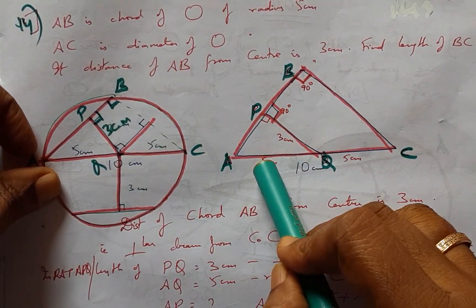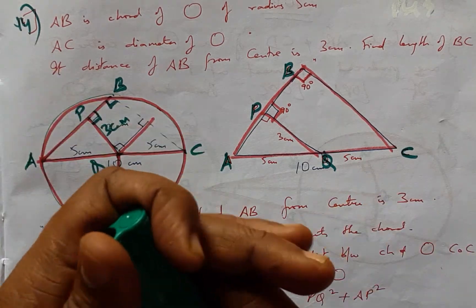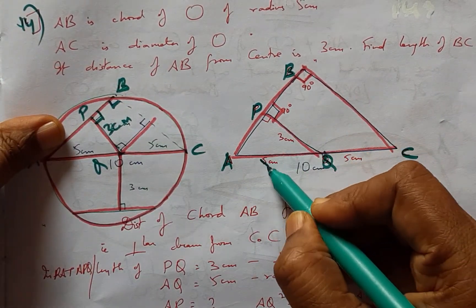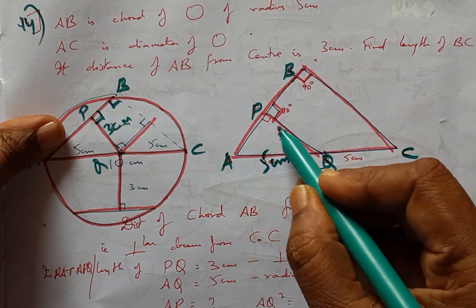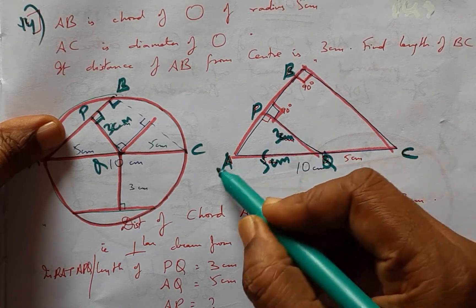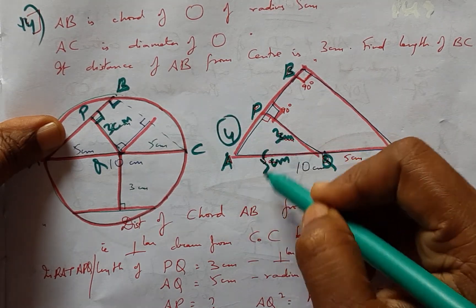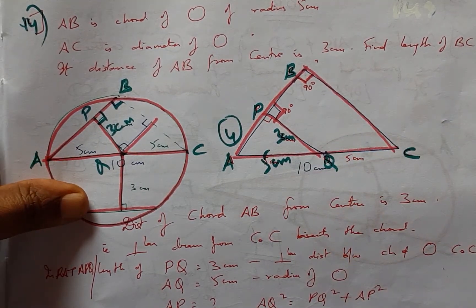Picking up the right angle triangle APQ, I can find AP because AQ is 5 cm and PQ is 3 cm. Applying Pythagoras theorem, I get the value of 4 because 3, 4, 5 is the Pythagorean triplet.